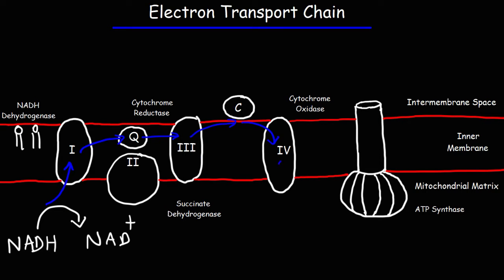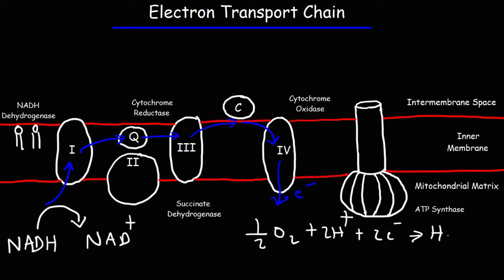The electrons flow out of complex four where they meet up with oxygen and some hydrogen ions to form water, which is one of the products of cellular respiration.